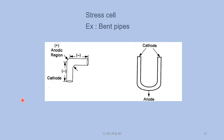Another example of a stress cell is bent pipes. In a bent pipe (U-tube type), the curved parts are stressed and act as anode — these undergo corrosion easily. The uncurved or remaining parts are unstressed and act as cathode — they do not undergo corrosion easily. This is the stress cell with bent pipe as an example.